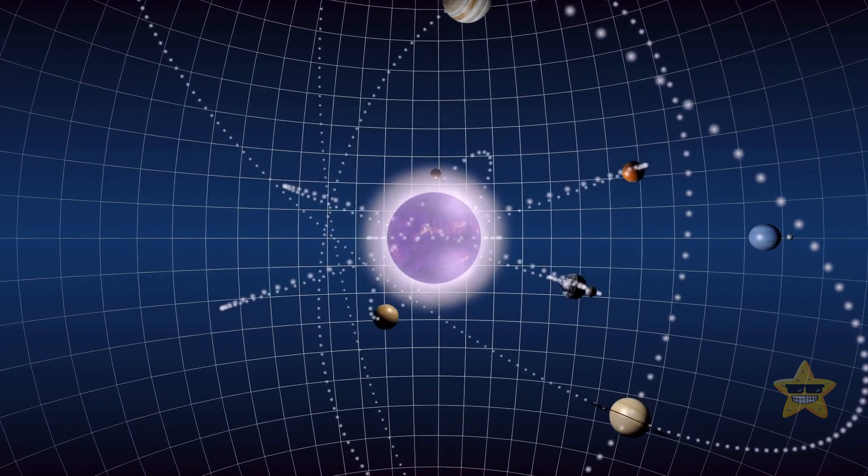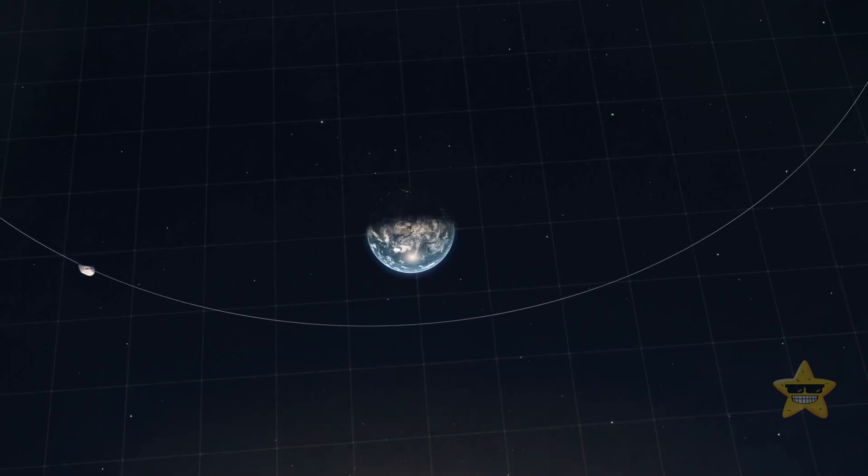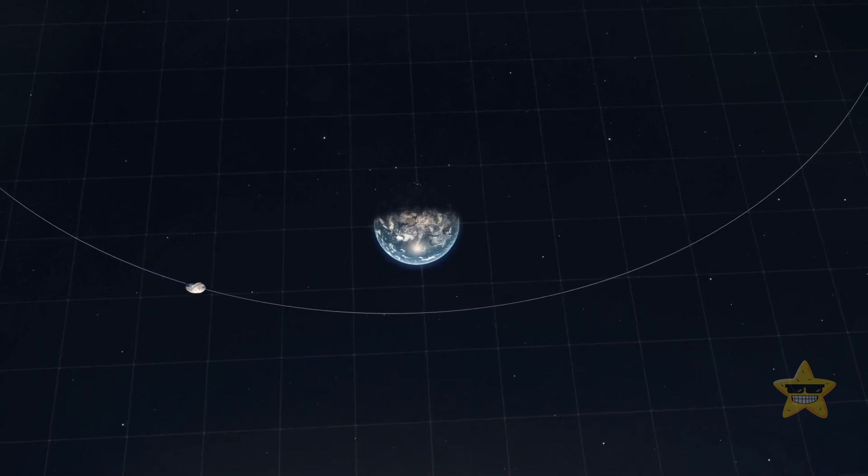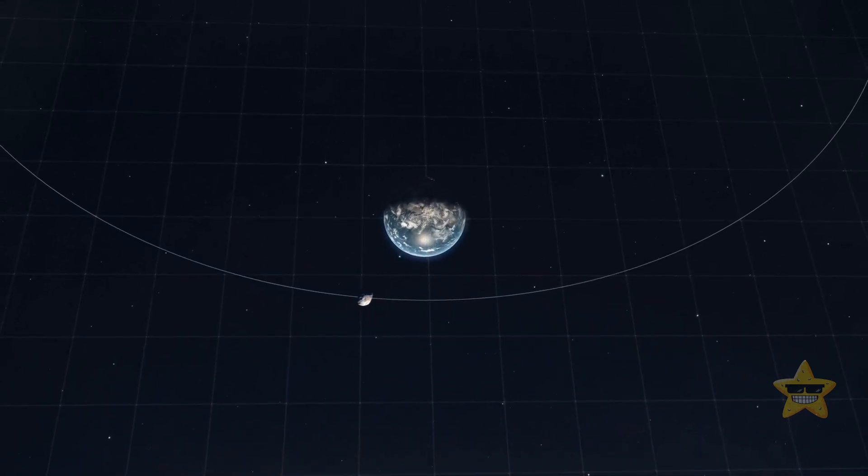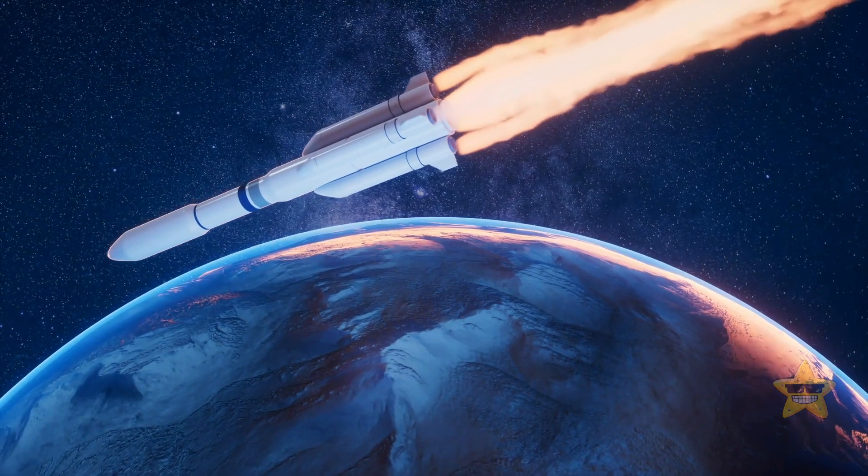Their interesting orbits make them perfect for studying gravitational influences and the intricacies of space mechanics. Plus they're usually close to their parent planets, which can also offer insights into the formation and evolution of planetary systems.